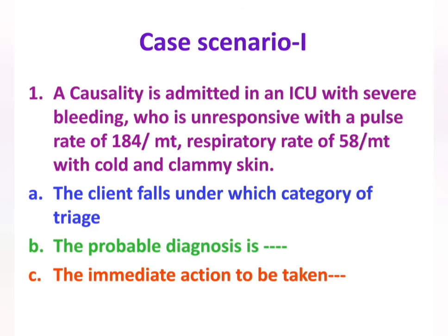Here is a case scenario: a casualty is admitted with severe bleeding, is unresponsive, with a respiratory rate of 58 per minute and cold and clammy skin. The questions are: which category of triage does this client fall under, what is the probable diagnosis, and what is the immediate action to be taken? You can give your answers in the comment section. Hope this video was interesting and useful — thanks for watching and subscribe for more videos.